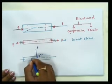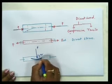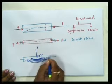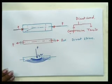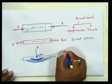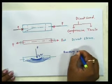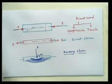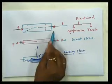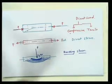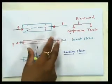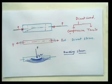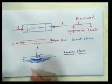In bending stresses, the load acts perpendicular to the axis — at 90 degrees — and is called a transverse load. This transverse load tries to produce bending or deflection in the beam. The stresses produced internally to resist this bending or deflection in the beam are called bending stresses.